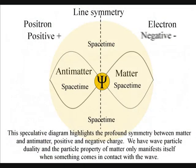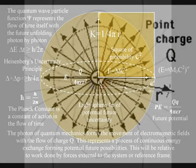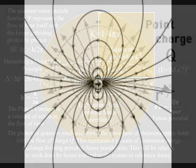But there is one process that is 100% efficient, and that is matter-antimatter annihilation, with the exchange of photon energy, forming the movement of charge, with the continuous flow of electromagnetic fields.